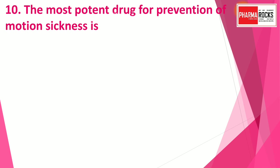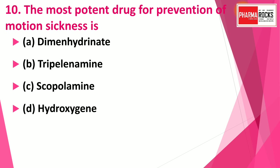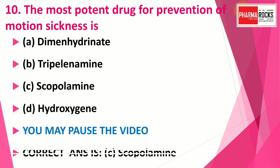Question number ten: The most potent drug for prevention of motion sickness is — option A: dimenhydrinate; option B: tripelennamine; option C: scopolamine; option D: hydroxyzine. The correct answer is option C — scopolamine. The most potent drug for prevention of motion sickness is scopolamine.